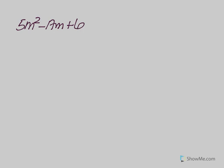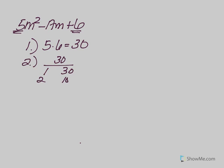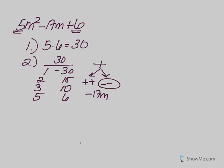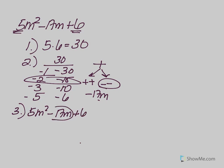Number two: 5m² - 17m + 6. Step one: multiply the first term and last term — 5 times 6 gives me 30. Step two: list the factors of 30 — 1 and 30, 2 and 15, 3 and 10, 5 and 6. Product is positive, so either two positives or two negatives — look to the middle term. The middle term is negative 17m, which means all factors have to be negative. Those that add up to negative 17 are negative 2 and negative 15. Step three: rewrite the trinomial, replacing the middle term with the two new factors.